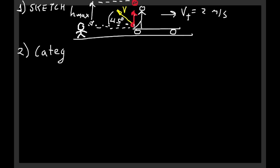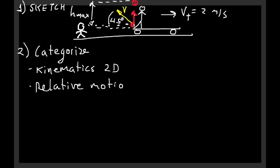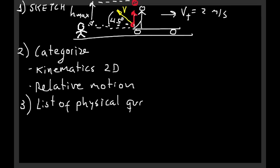The second step for any physics problem is to categorize it. This is a problem that involves the motion of an object — the ball — so it is a kinematics problem. On top of that, the problem talks about the velocity of the ball with respect to different systems of reference: with respect to the person on the train and with respect to the person on the ground, so this is also a relative motion problem.